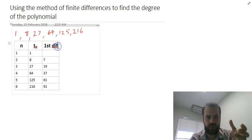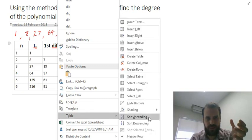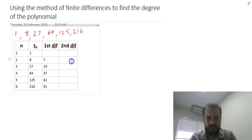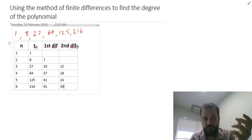So I still haven't found what I'm looking for. So I'm going to insert another column, and that one's going to be called the second difference. And this time I'm going to be subtracting these numbers from these numbers. So 19 minus 7, I think that's 12. 37 minus 19, I think that's 18, and so on.